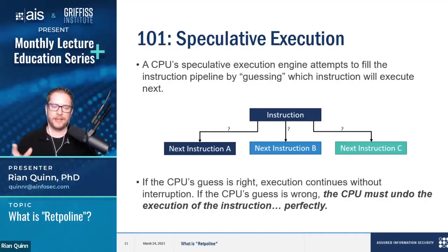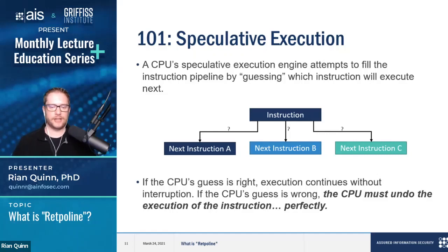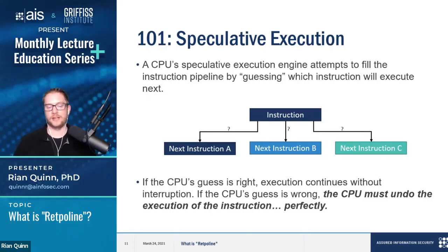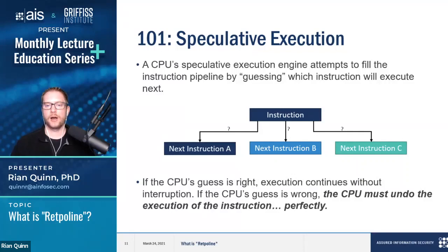If the CPU guesses correctly, the pipeline is full and everything continues with no issues. But if it guesses wrong, it has to undo all of the instructions it just executed because they're all wrong — those instructions could have manipulated memory, touched registers, or other resources, so it has to actually undo that execution. Otherwise the execution of the program won't be correct because it guessed wrong and started executing a bunch of instructions it shouldn't have.